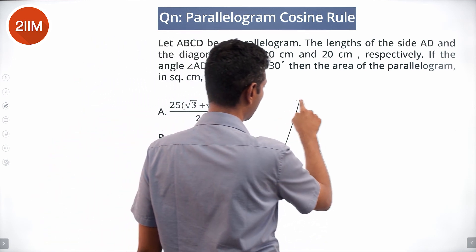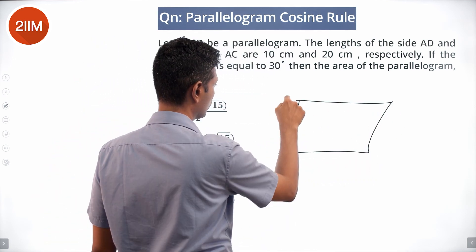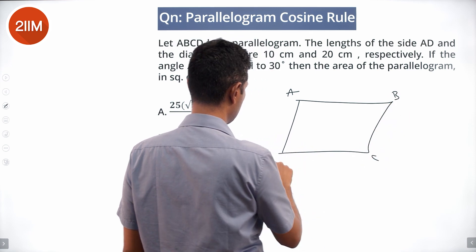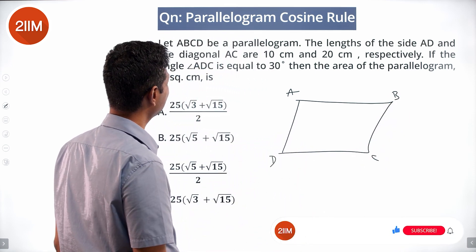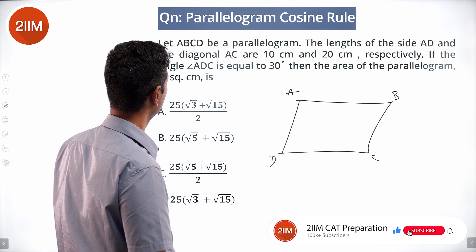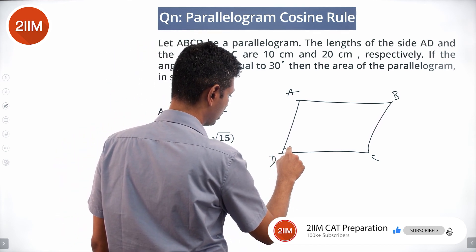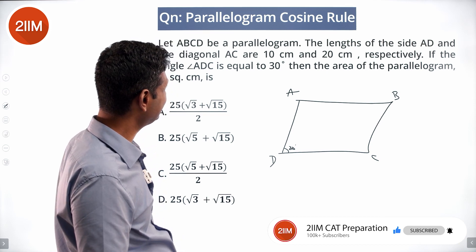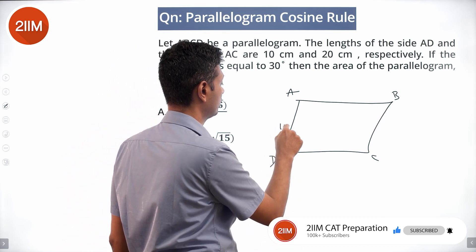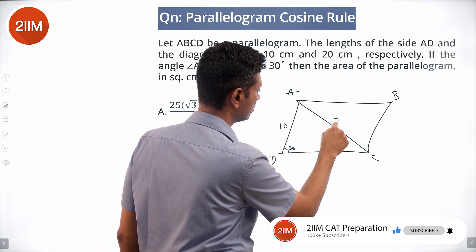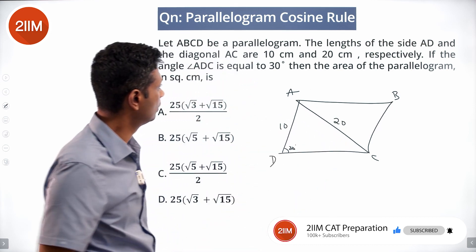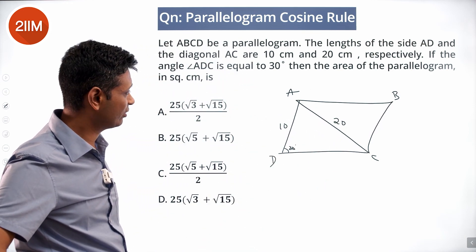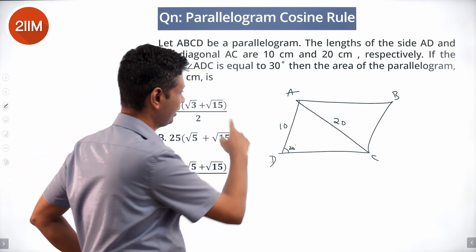So ABCD — angle ADC is 30 degrees. AD and AC are 10 and 20, so this is 10 and this is 20. We need to find the area of the parallelogram in square centimeters, and this side is also 10.